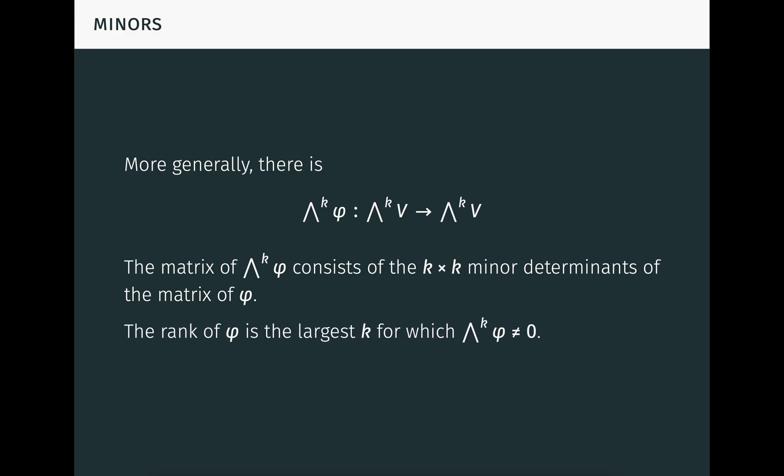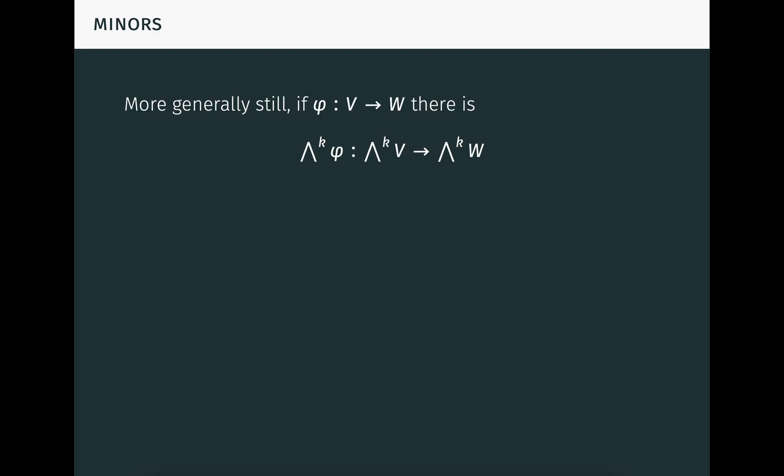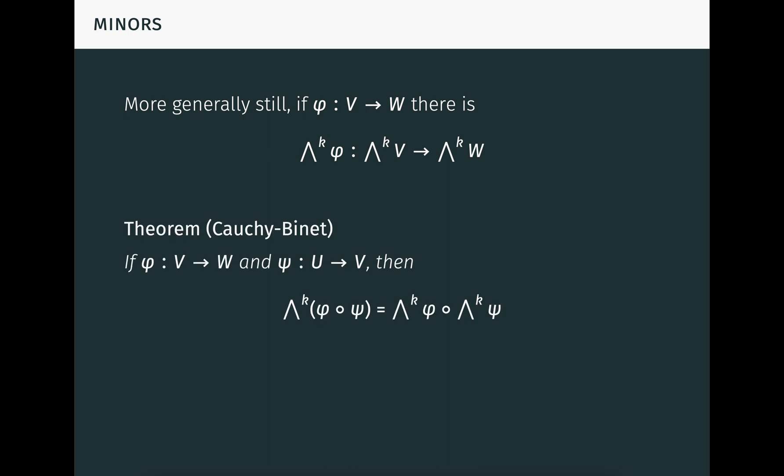It follows that the rank of phi is just the largest k for which wedge k phi is non-zero. And we don't need to limit ourselves to linear maps on one vector space either. Even more generally, if phi is a linear map from v to w, there's a kth exterior power of phi from the kth exterior power of v to the kth exterior power of w, defined in exactly the same way as before. The exterior power operation plays well with composition, as seen in the Cauchy-Binet theorem, which says that the exterior power of a composite is the composite of the exterior powers. Viewers familiar with category theory may notice this shows that the exterior power operation is functorial, which makes it very convenient and powerful.